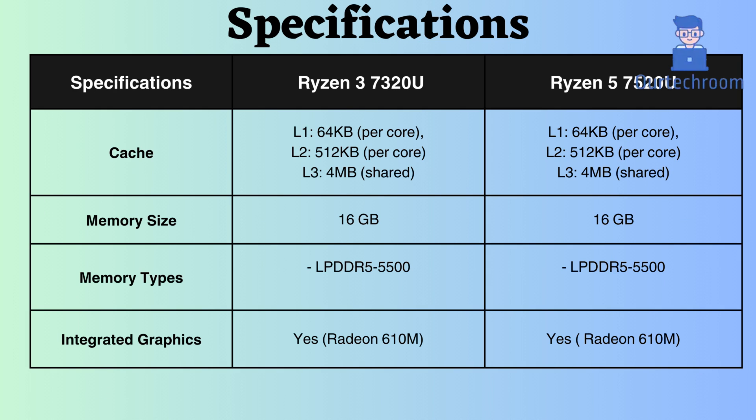The L1, L2, and L3 cache for both of these processors are 64 KB per core, 512 KB per core, and 4 MB shared, which constitutes a substantial amount of cache for low-end laptops.